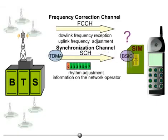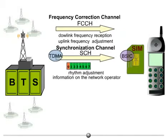After this step, the mobile is able to decide whether it has chosen the proper network. If not, it starts the same procedure again, trying with the second strongest FCCH received.